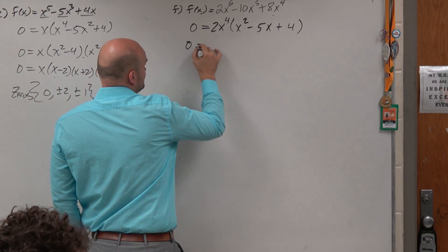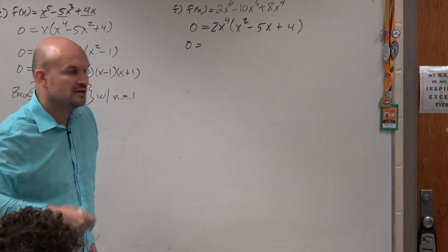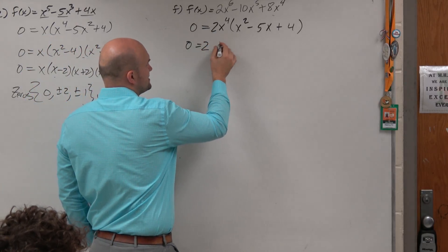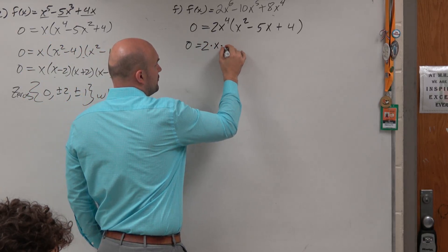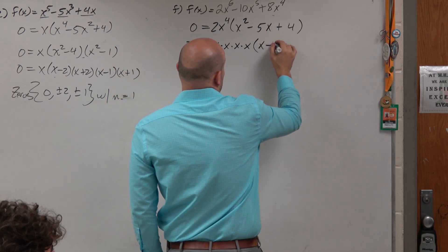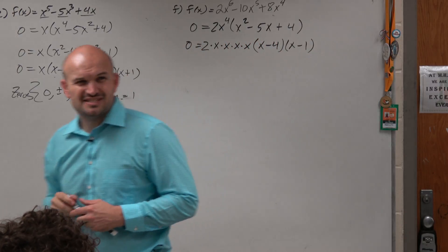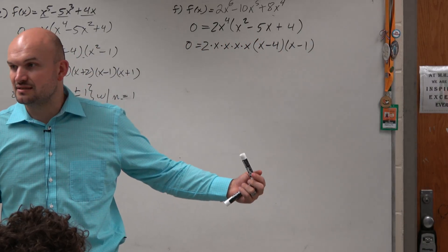And now here comes the important thing. What do we make sense of this x to the 4th? So what I want you to do is just think about x to the 4th in a couple ways. x to the 4th is really this. This can be factored down into x minus 4 times x minus 1. But x to the 4th is x times x times x, correct?